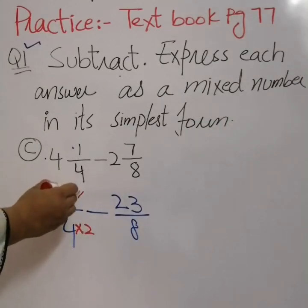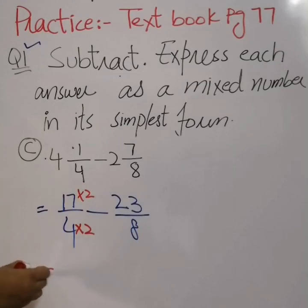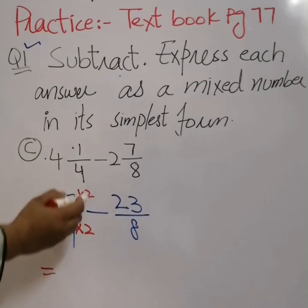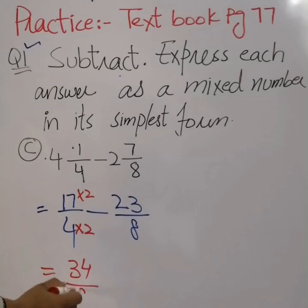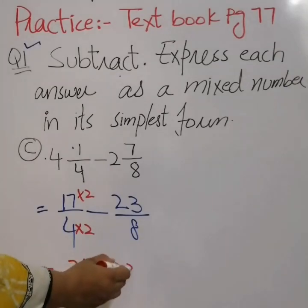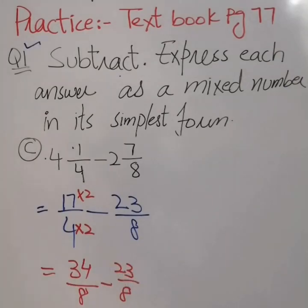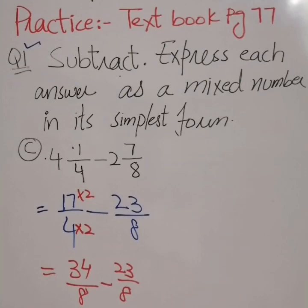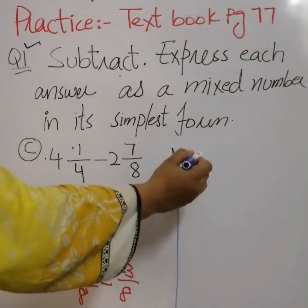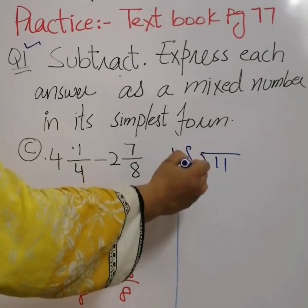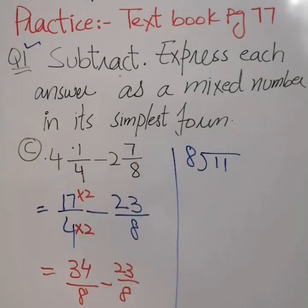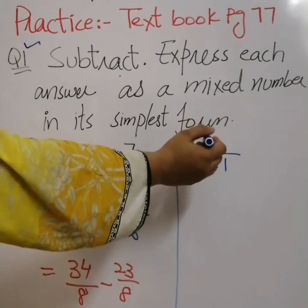We have two different denominators, 4 and 8. We make 4 the common denominator by multiplying with 2: 17 times 2 gives us 34 over 8, minus 23 over 8. When we subtract, 34 minus 23 gives us 11 over 8. 11 over 8 is an improper fraction, so we convert it into a mixed number by dividing 11 by 8.